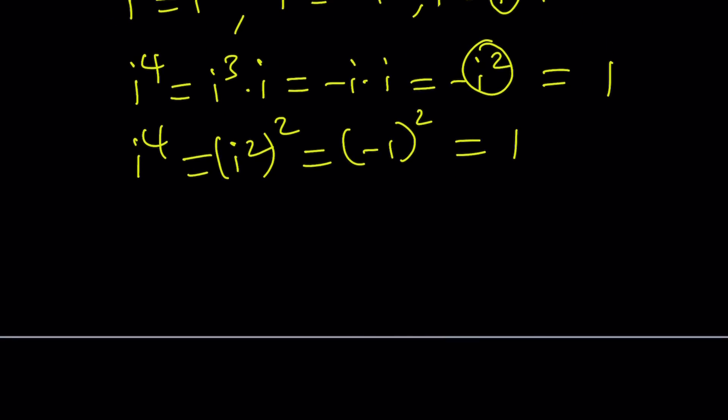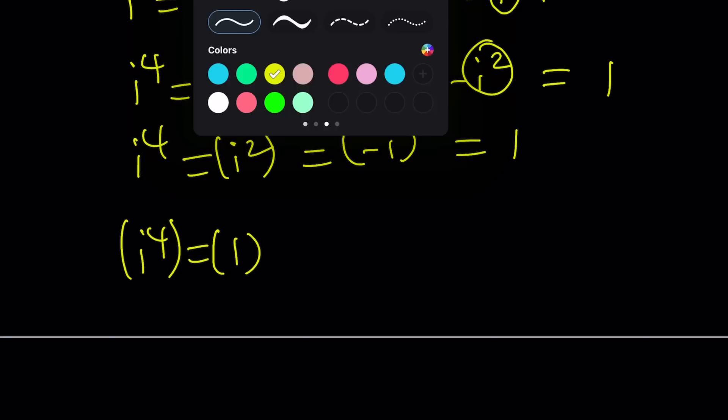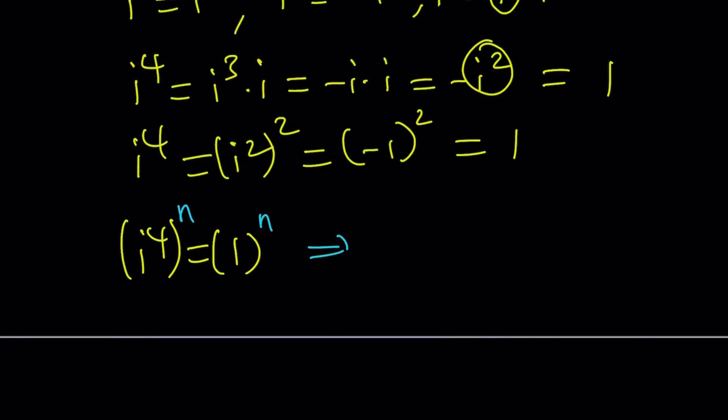But when you say i to the power x equals 1, that's a different story. If i to the fourth is 1, then you can just raise both sides to the power n and we'll still have a valid equation. And i to the fourth n will be 1 and that means x will be 4n as before. And this brings us to the end of this video.